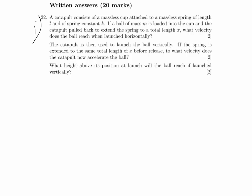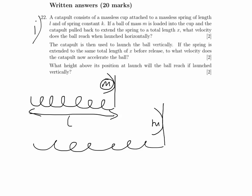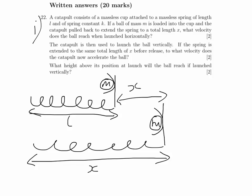First of our written answers, and it's got three parts to it. We're just going to look at part one where we're trying to find the velocity that the ball is launched horizontally. We've got this catapult, so I'm just going to draw a quick picture of how I visualized it. There's the spring, the massless cup, and the mass sitting in the massless cup. It has initially a length of L, and then the catapult is extended backwards to a length of x.